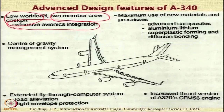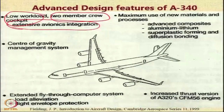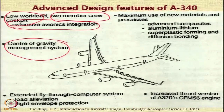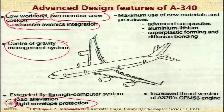This is an example of how technological developments drive requirements. Earlier, customers were happy to have three or four people in the cockpit, but now it is only two. This aircraft also has a center of gravity management system, flight envelope protection, and load alleviation by automatic deflection of control surfaces to handle gust loading — all made possible by the extended fly-by-wire computer system.